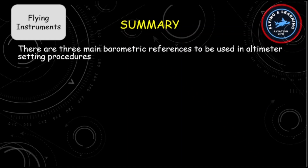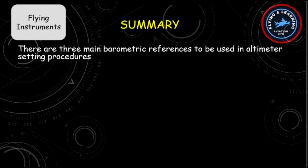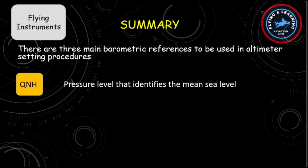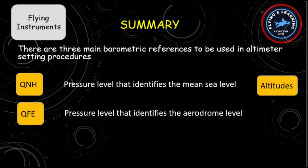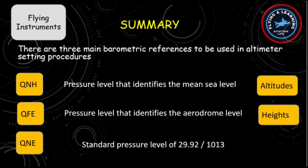Summarizing all this, there are three main barometric references used in altimeter setting procedures. First is QNH — a pressure level that identifies mean sea level; therefore the altimeter will indicate altitudes. Then there is QFE — a pressure level that identifies a certain aerodrome level; therefore the altimeter will indicate height. Finally, there is QNE, which identifies the standard pressure level of 29.92 inches of mercury or 1013 millibars; therefore the altimeter will indicate flight levels.